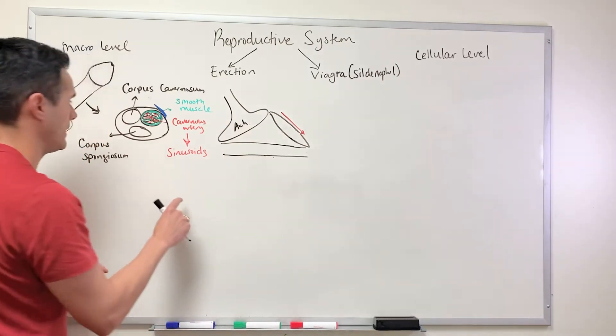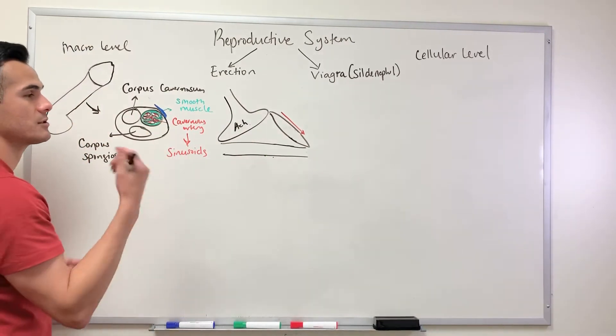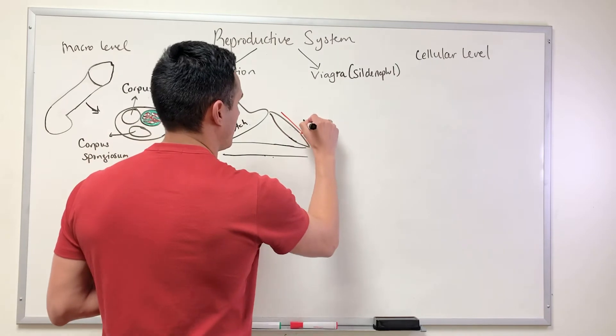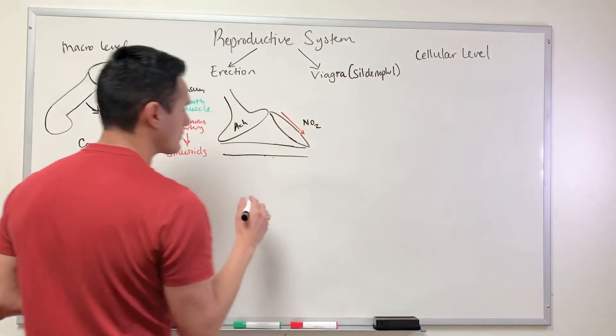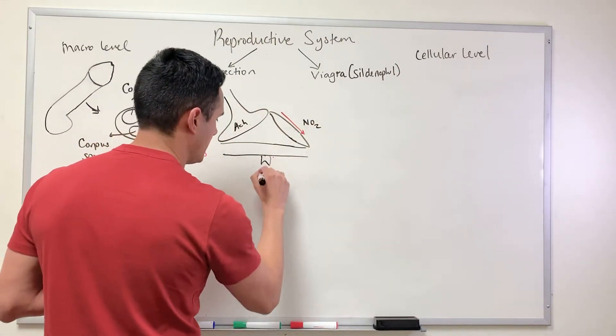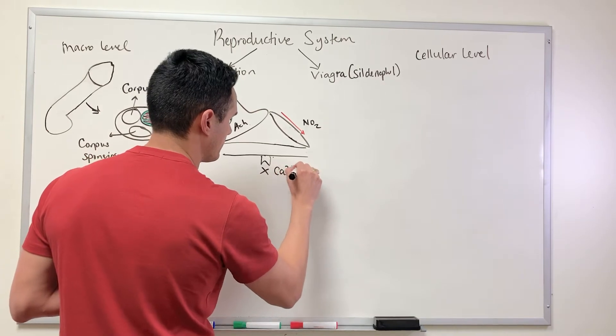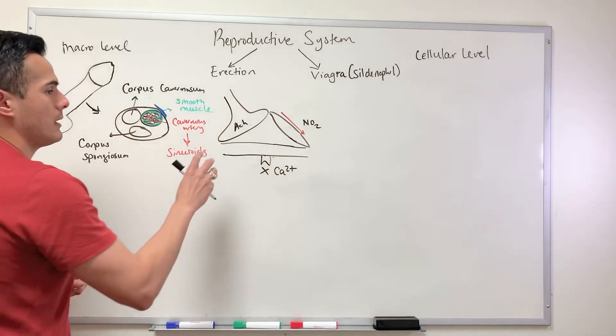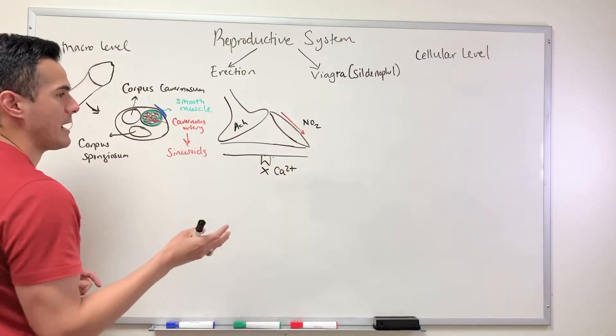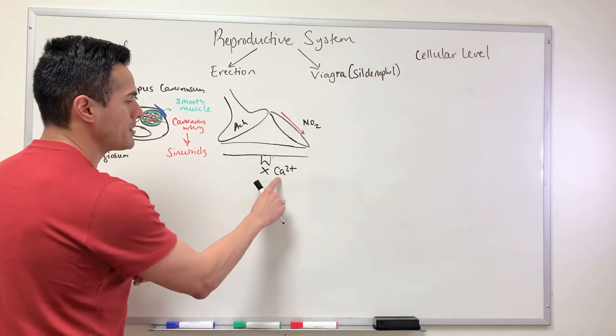Some of the players that we need in order for this smooth muscle to relax: we need nitric oxide and then we also need to inhibit the entry of calcium. How does this happen?